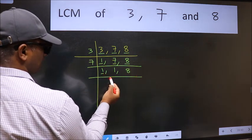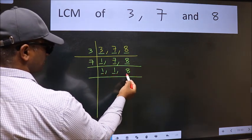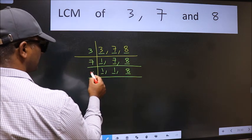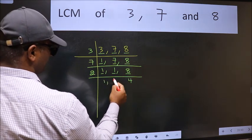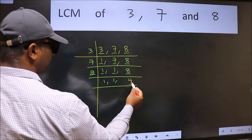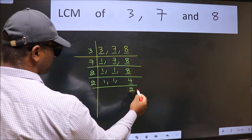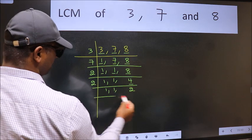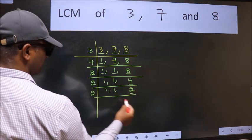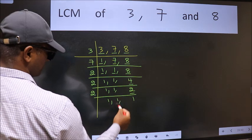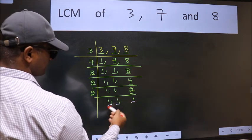Now we got 1 here and here, so focus on to the next number 8. 8 is 2 times 4. Now here we have 4; 4 is 2 times 2. Now we have 2; 2 is a prime number, so 2 divides by 2. So we got 1 in all 3 places.